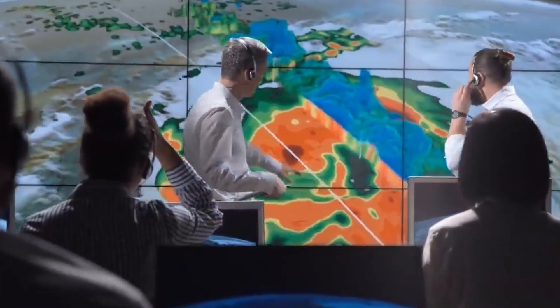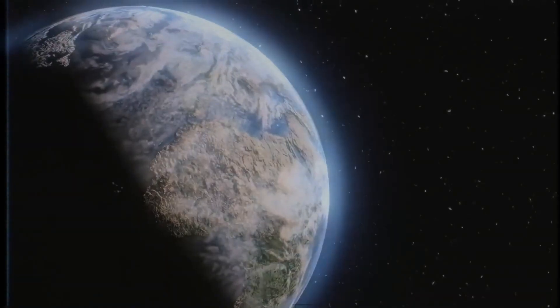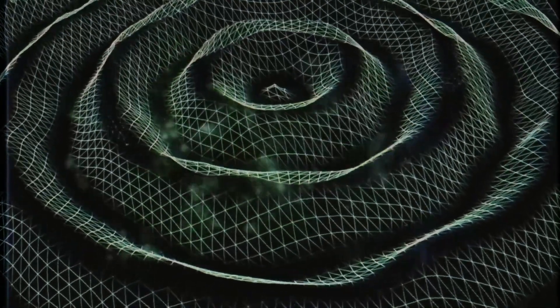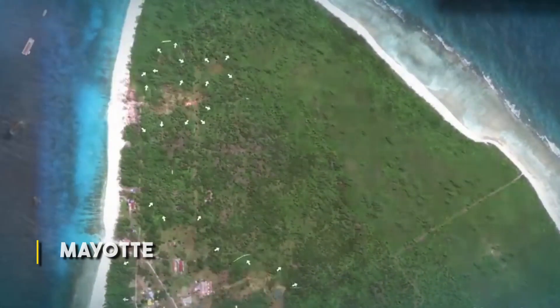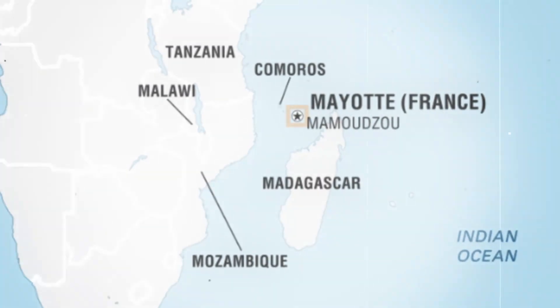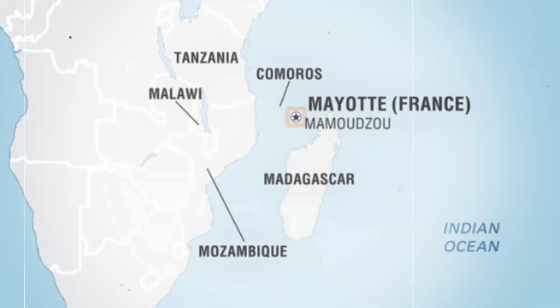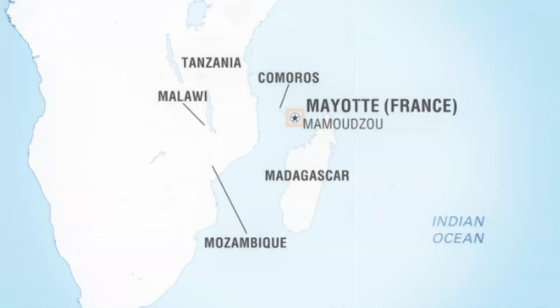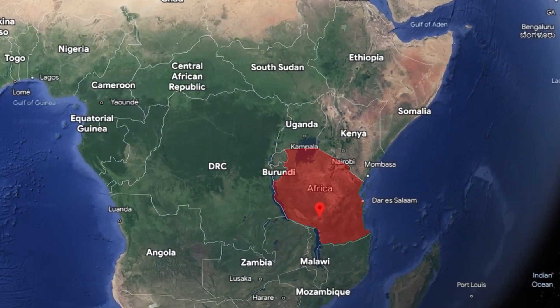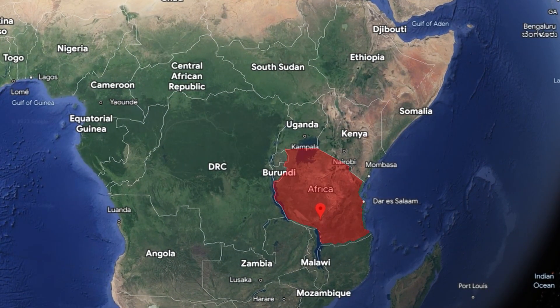Before 9:30 UTC on November 11th, a strange rumbling shook the entire planet. The seismic waves started around 15 miles off the coast of Mayotte, a French island located midway between Africa and the northernmost tip of Madagascar.